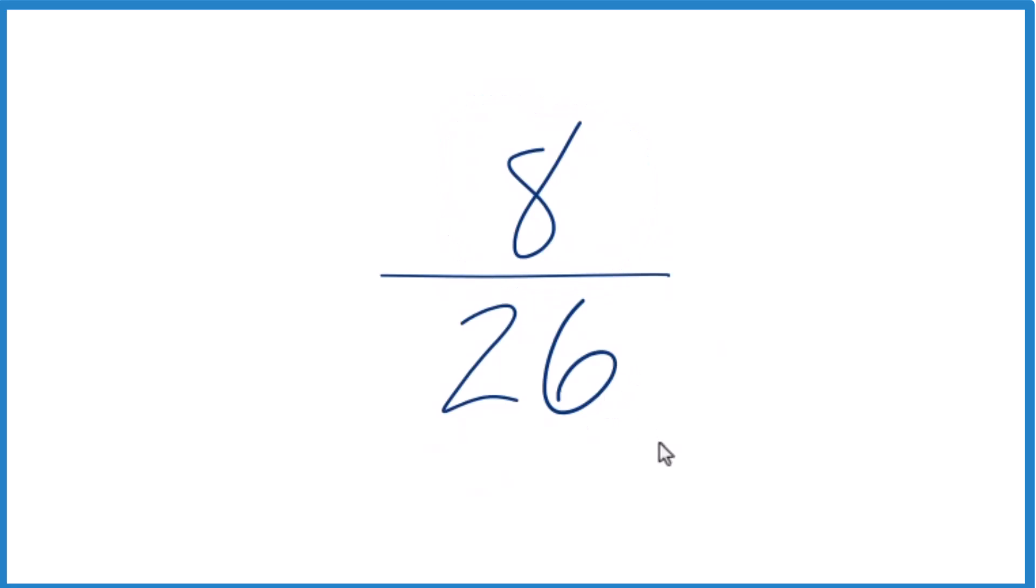To do that, we need to find a common factor, something that goes into both 8 and 26 evenly. We're looking for a whole number that goes into 8 and 26 evenly. Since these are both even numbers, I'm just going to divide both of them by 2.